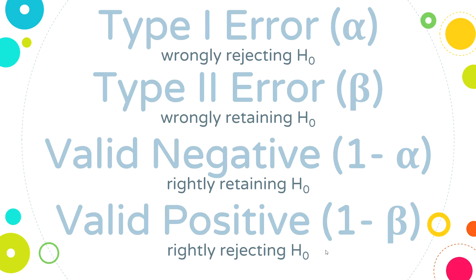We ask: how willing am I to wrongly reject the null? How willing am I to go, 'look what I found,' when you didn't really find anything? In this case, how willing are you to arrest a person who is sober? We often set this alpha value at 0.05, which means that 1 in 20 times we will arrest an innocent person. Whenever you change one of these values, it changes the others — they affect one another. So in science, we often want no more than 0.05, that is, no more than a 5% chance of wrongly rejecting the null.